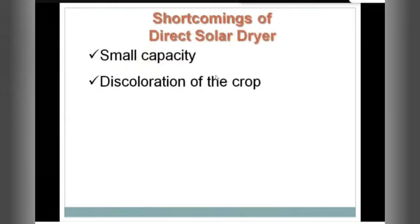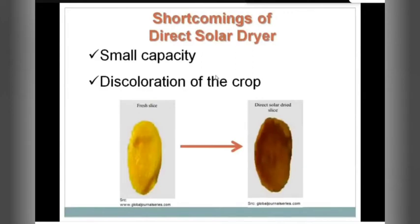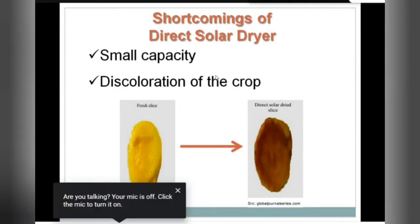There were some shortcomings of the direct solar dryer. First, it has a very small capacity — you can't put 200 kg of produce at once. Second, it leads to discoloration of the crop. For example, if you put mango slices inside a direct solar dryer, they will turn brown — totally discolored. Japanese people eat with their eyes; customers in the market will only buy produce that looks visually attractive. If your crop is totally discolored, you may not fetch higher prices.